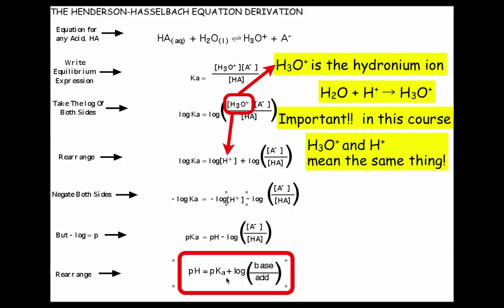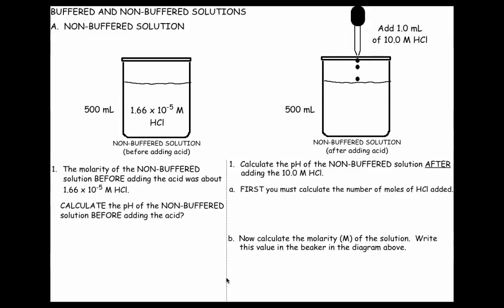Let's talk about buffered and non-buffered solutions. First, we're going to talk about a non-buffered solution. Let's suppose we have 500 milliliters of a 1.66 times 10 to the minus 5 molar hydrochloric acid. Now that's a strong acid. The molarity of the non-buffered solution before adding the acid was about this. Now over here, before we calculate that, we're going to add an acid, a strong acid, 10 molar to the non-buffered solution.